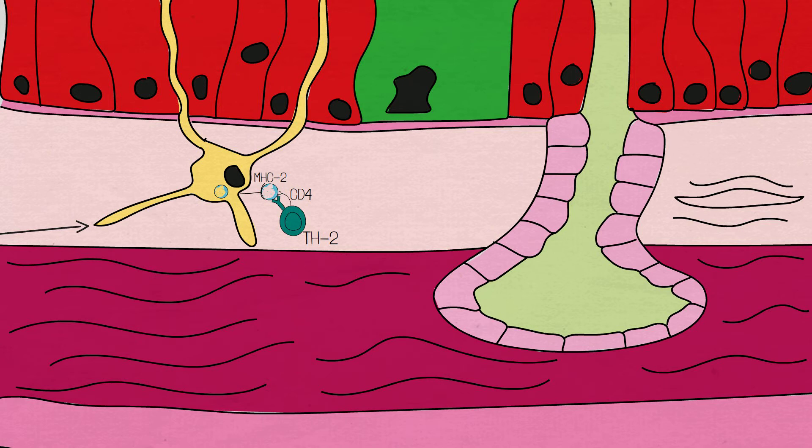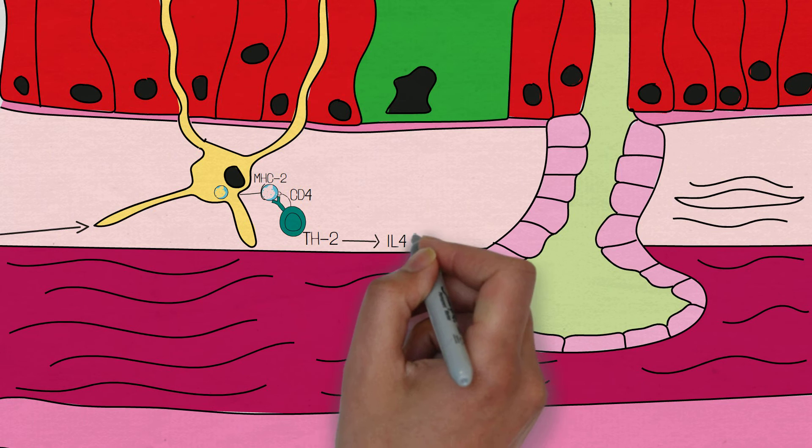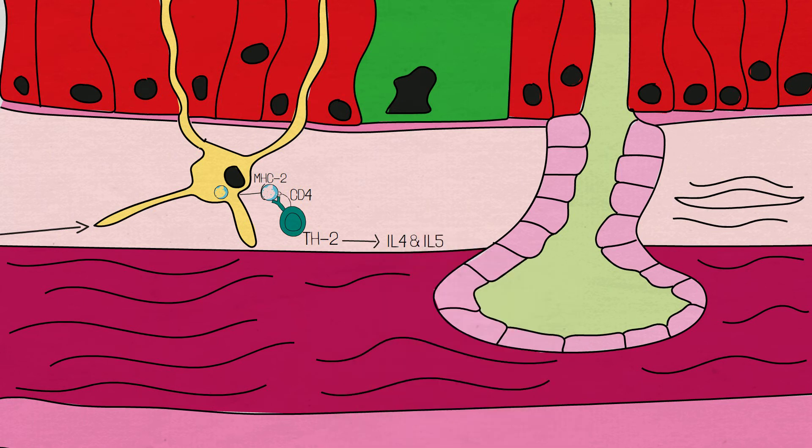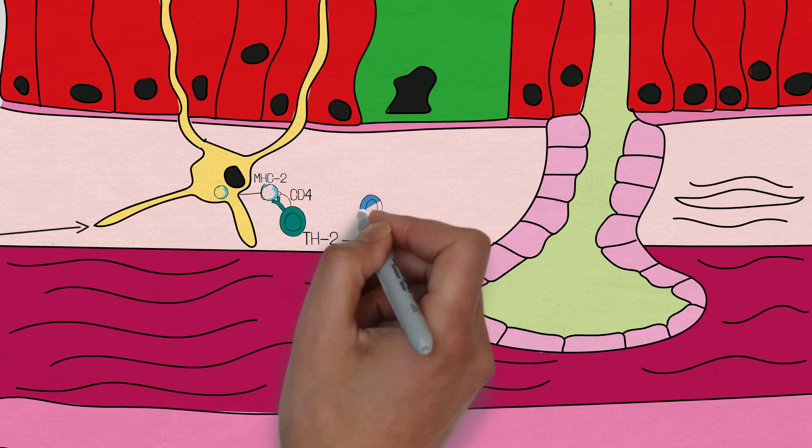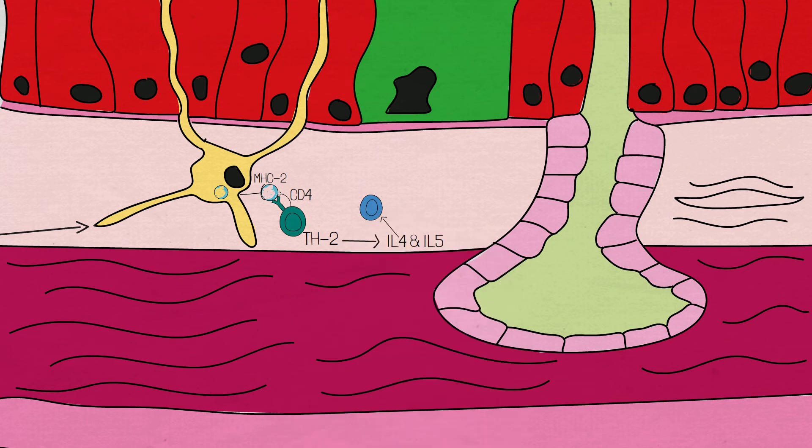The T-cell releases two very important cytokines, interleukin-4 and interleukin-5. Interleukin-4 activates B lymphocytes, also known as B cells, which, when activated, become plasma cells.